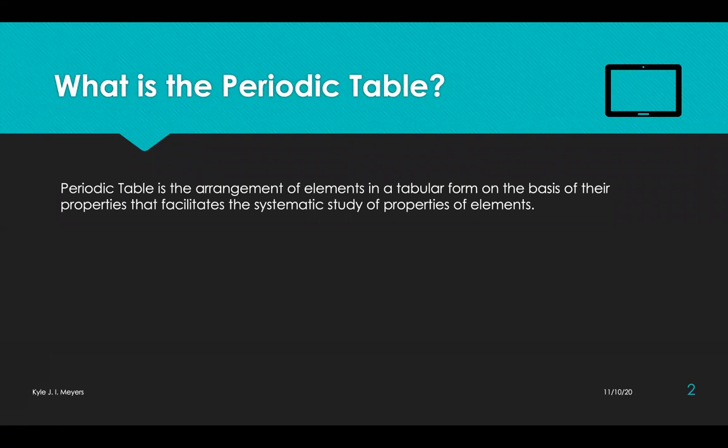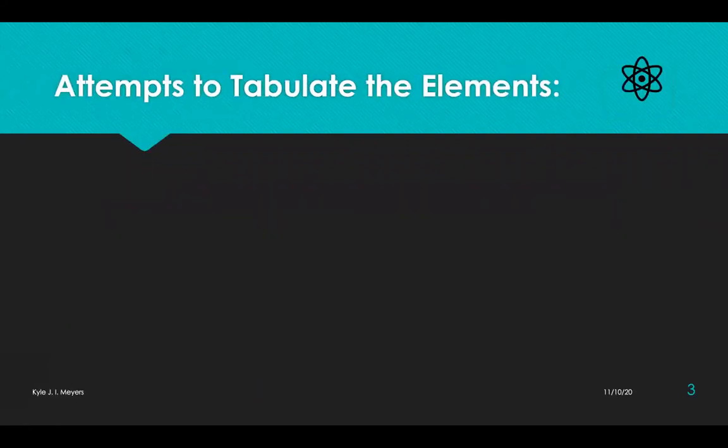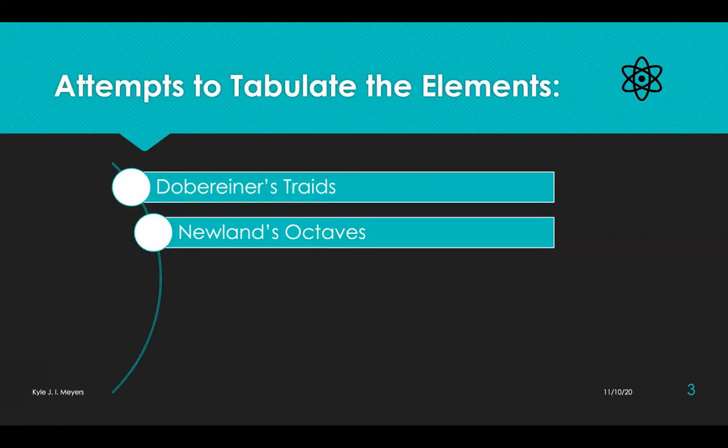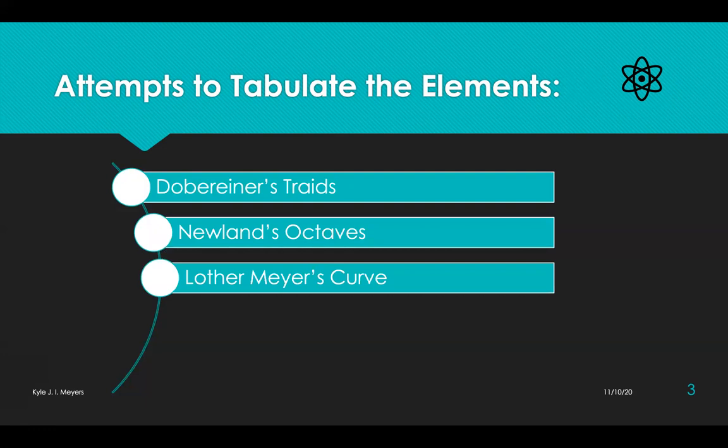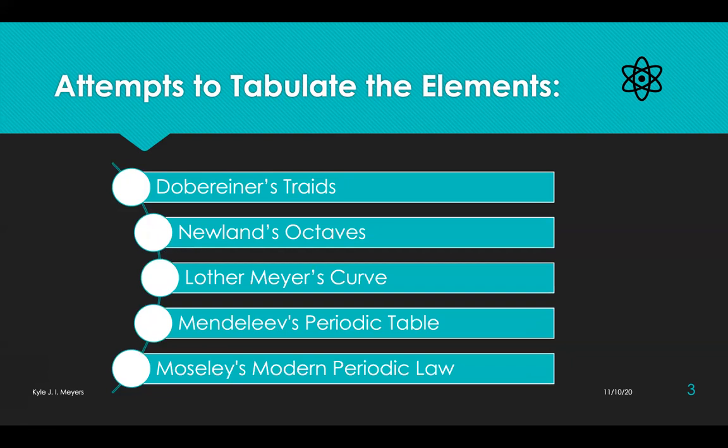As we look at the genesis of the periodic table, the early attempts at classification of elements were based on experimental observations on a limited number of experiments that were known at its time. We start with Döbereiner's triads, Newland's octaves, Lothar Meyer's curves, Mendeleev's periodic table, and finally, the modern periodic table by Henry Moseley.